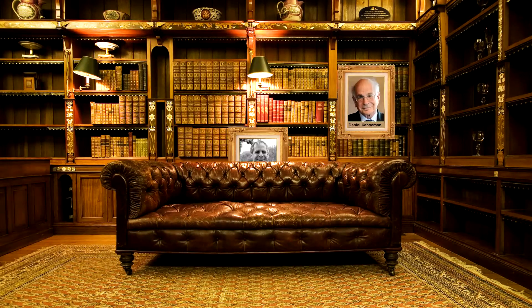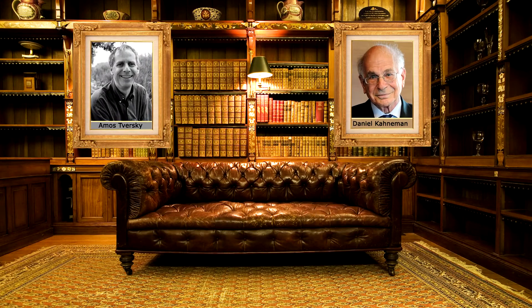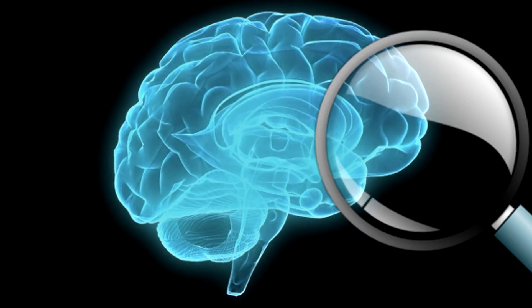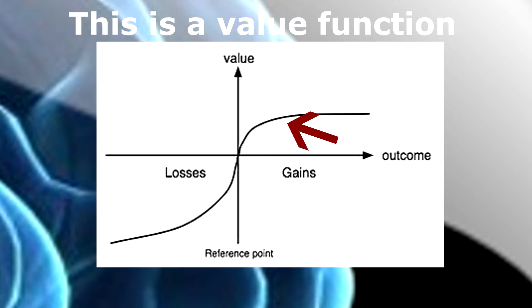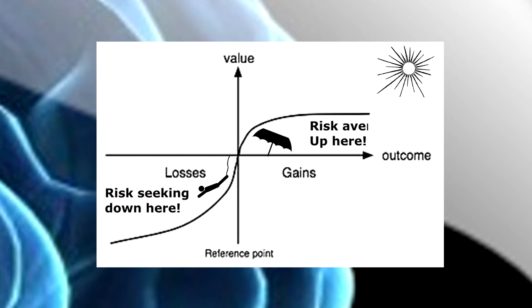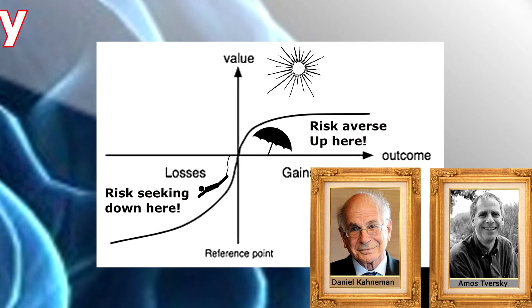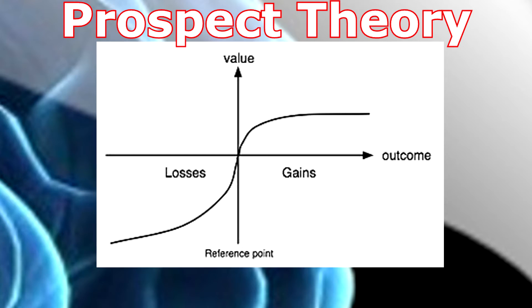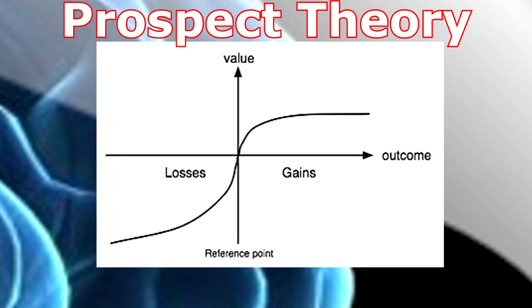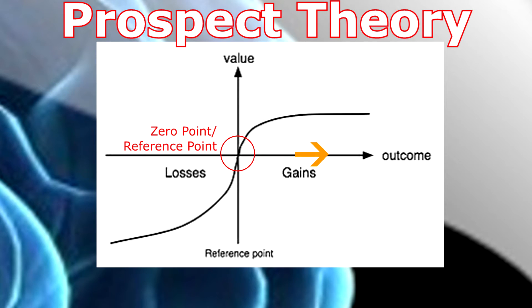What do people do instead? Kahneman and Tversky suggest that people form mental representations of questions in terms of gains and losses. Due to a value function that is concave over gains and convex over losses, people are risk-seeking over losses and risk-averse over gains. This is a feature of prospect theory, which will be covered in a later video. When people observe a prospect, they create something like a zero point — anything positive relative to that zero point is a gain, and anything negative is a loss.